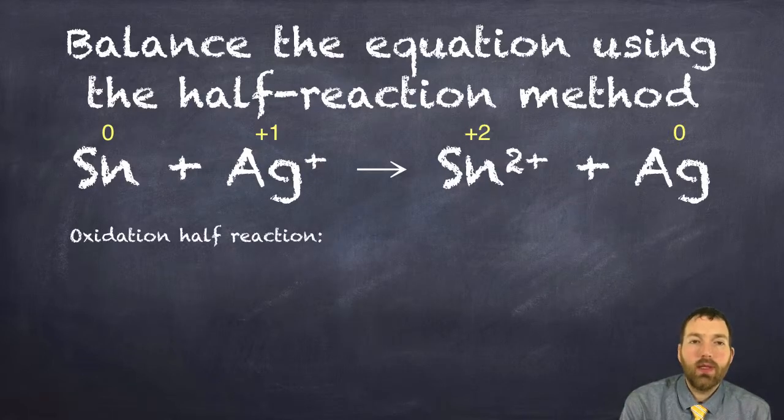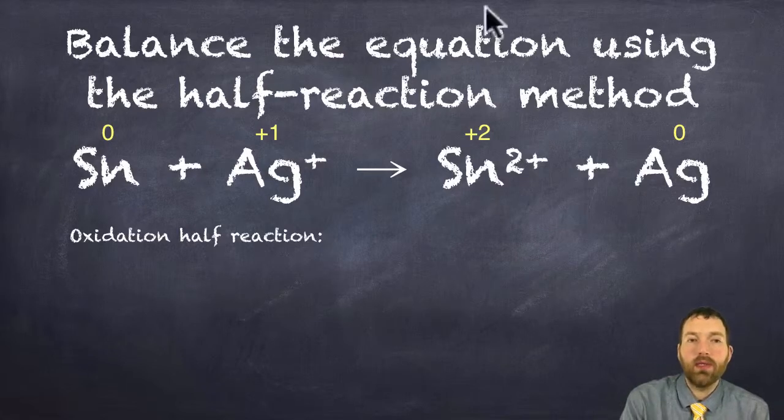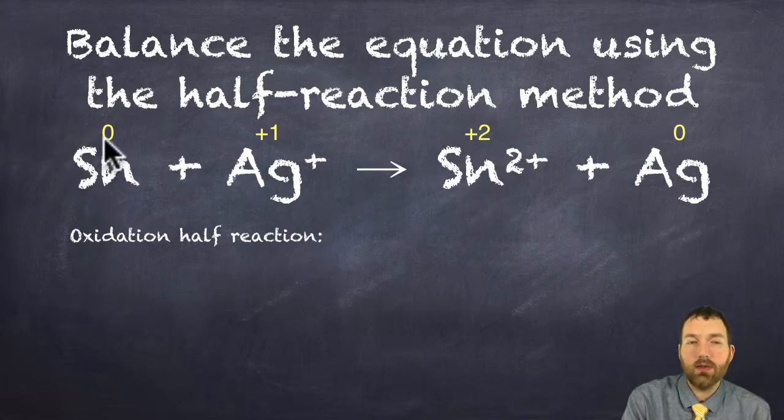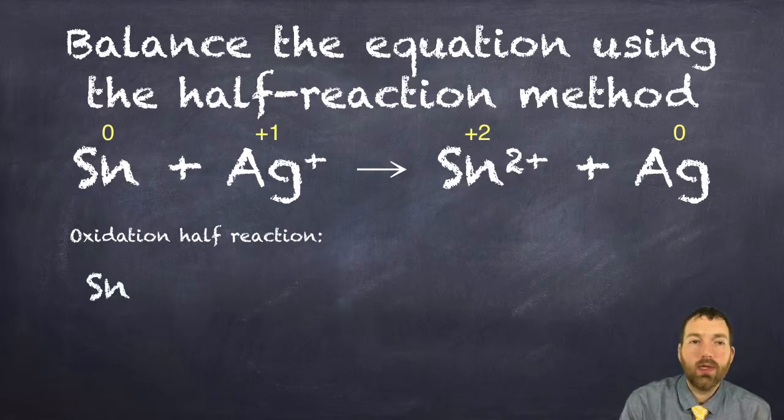In the oxidation half reaction, it looks like tin is oxidized. It goes from a zero to a plus two. So let's go ahead and write that.